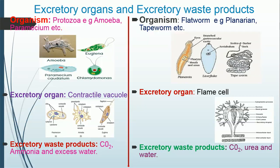The next organism is flatworm. Examples of flatworms include planaria, tapeworm, liver fluke, and so on. The excretory structure is the flame cell — the flame cell is the excretory organ of flatworms. Excretory waste products include carbon dioxide, urea, and water. Urea is a nitrogenous waste in liquid form.